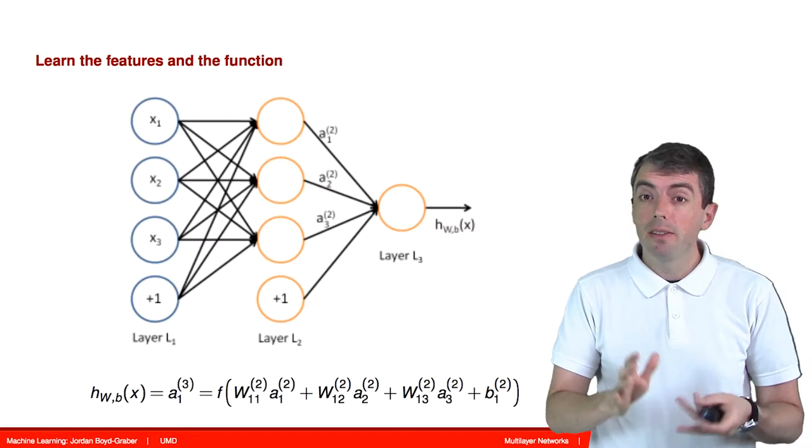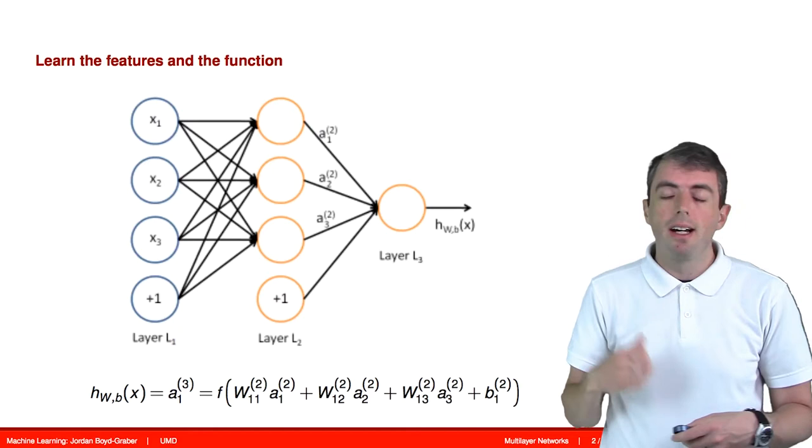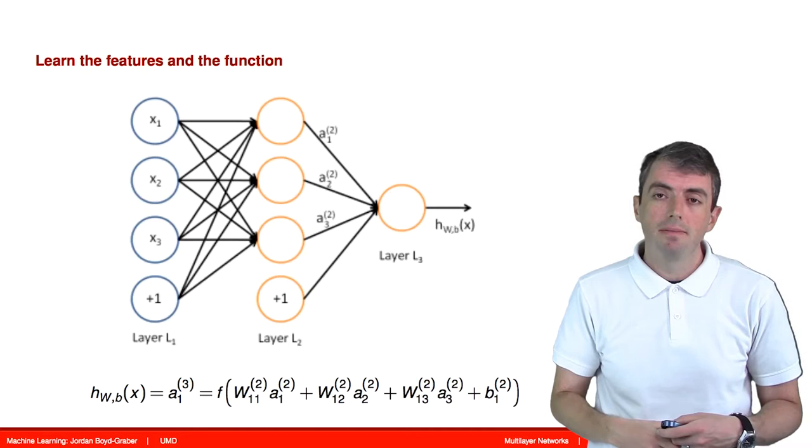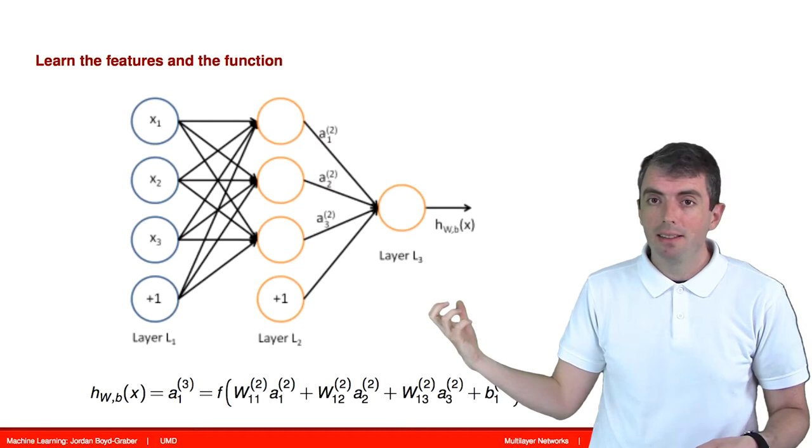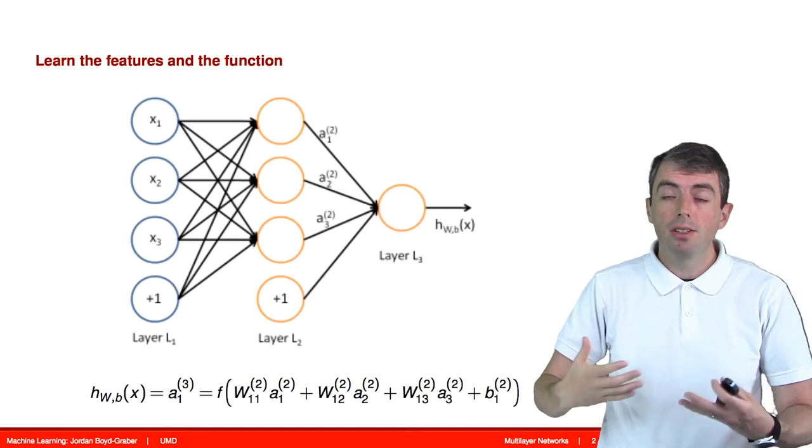Everywhere you have an orange node in this picture, you have a function that looks a lot like logistic regression. What's different is that the inputs to the logistic regression on the final layer are learned and not given to you as data. You need to learn the weights and the biases that will generate these features, and then the weights and the biases that will take those features into your final answer.